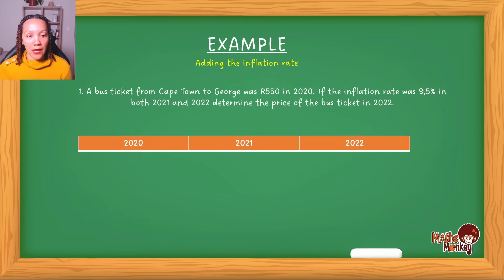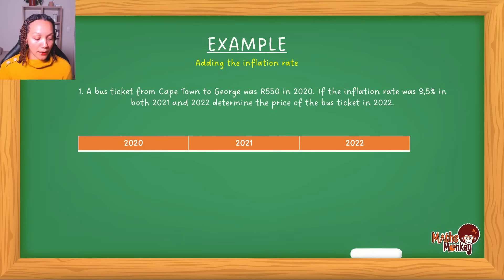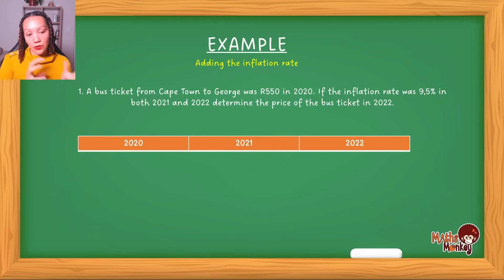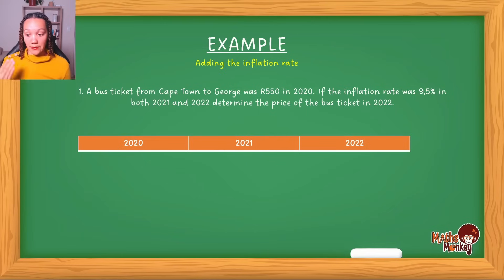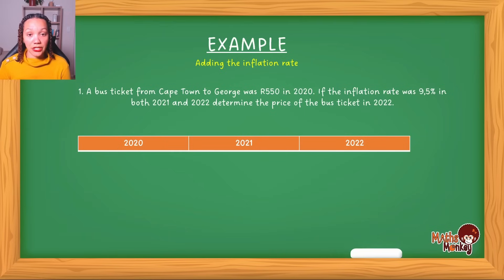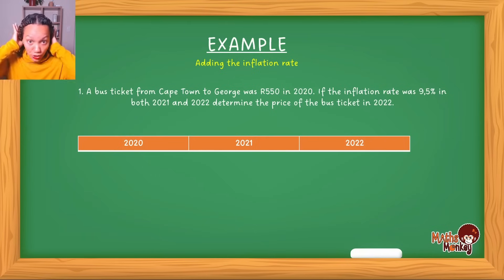For example, they give you the price of bread this year along with the inflation rate and ask what was the price last year — so you are working back. The third type is where they give you a starting price, say in 2021, and also give you the price in 2022, and you have to calculate the percentage difference. So those are the three types: adding the inflation rate, calculating the original price before the increase, and calculating the actual inflation rate percentage.